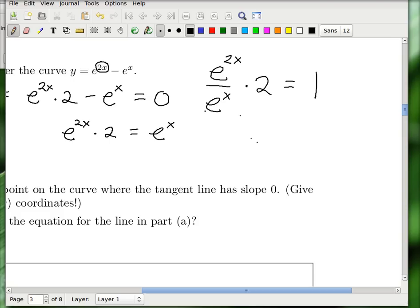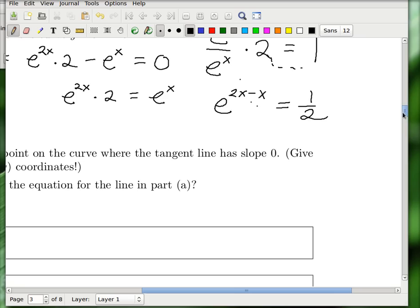So you'll have e to the 2x over e to the x times 2 equals 1, and so these bases are the same, and so my favorite rule for exponents says that this is really the same thing as just e to the 2x minus x. When you have a quotient, the exponents subtract. And I might as well move this 2 over to the other side, and if I do that I'll have 1 half. So 2x minus x is just x, so that gives me e to the x is equal to 1 half.